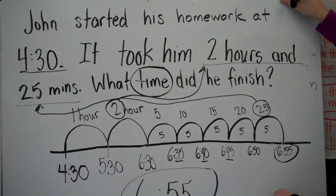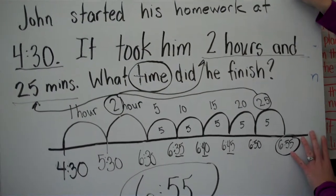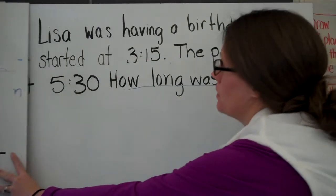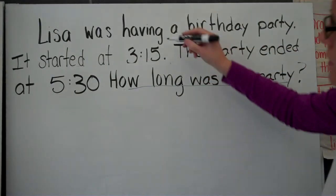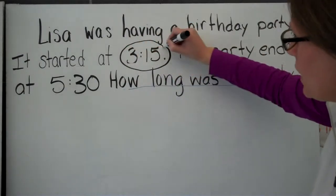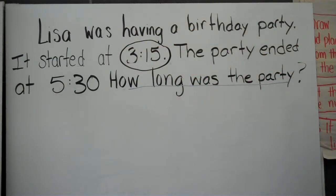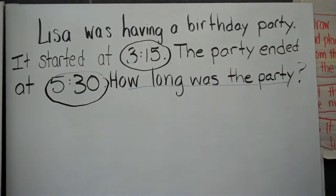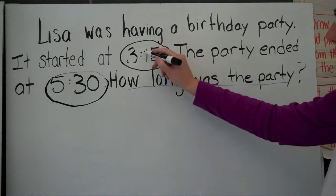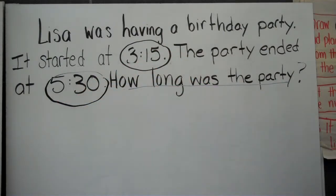Okay, let's take a look at the next problem. The next problem, I think, is a little bit easier. It says, Lisa was having a birthday party. It started at 3:15. The party ended at 5:30. How long was the party? So now I have a start time and I have an end time.